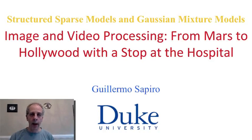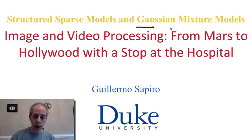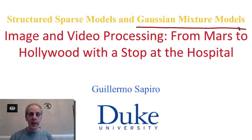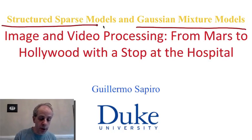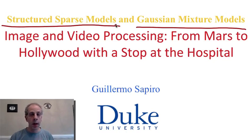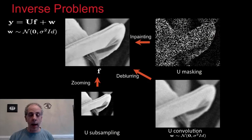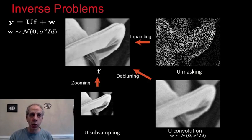Hello and welcome back. In this video I want to talk about Gaussian mixture models and their connection to sparse modeling, and in particular this is going to be useful for us to introduce the concept of structured sparse models. As examples we are going to use the same type of image processing tasks that we have been using for regular sparse modeling in the previous videos.